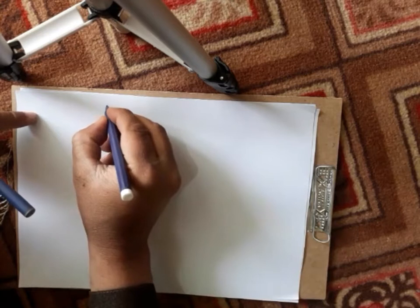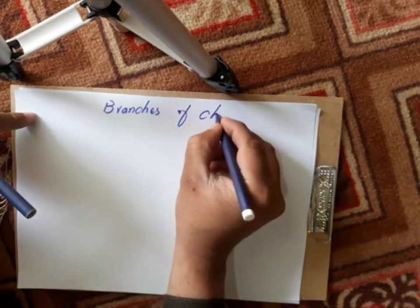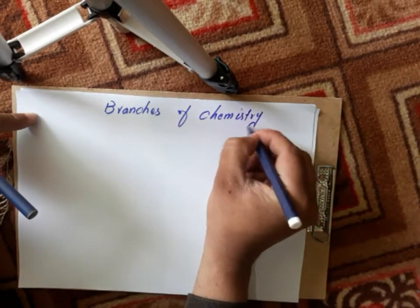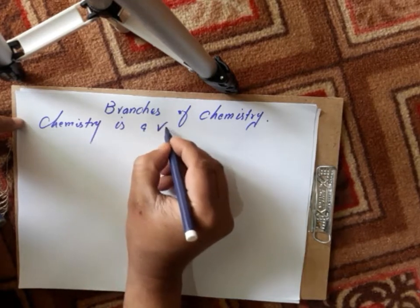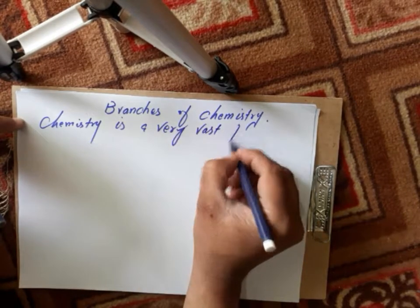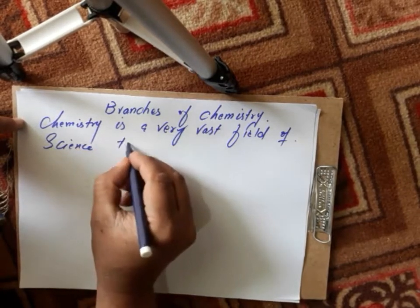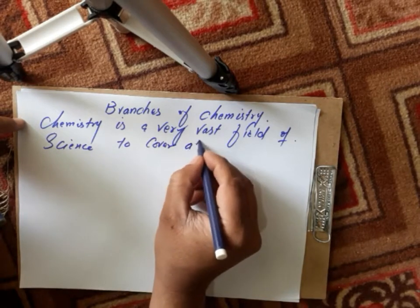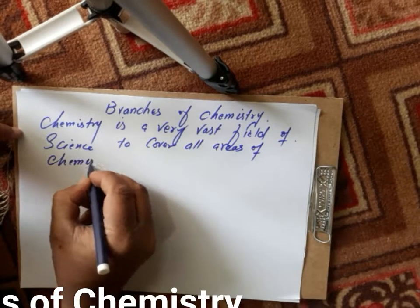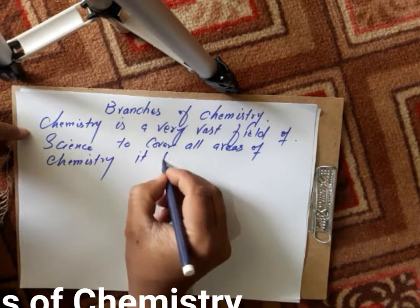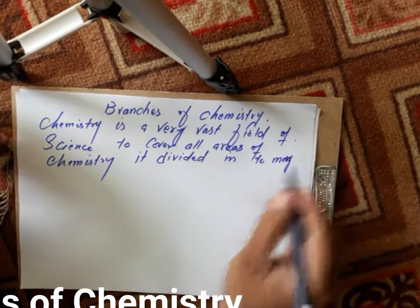The branches of chemistry. Chemistry is a very vast field of science. To cover all areas of chemistry, it is divided into many branches.